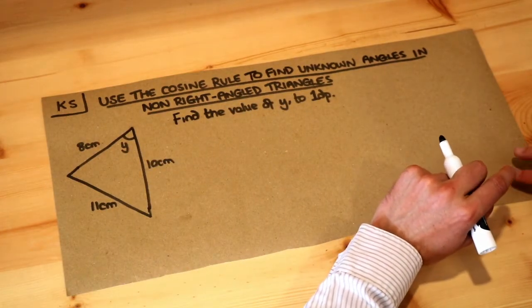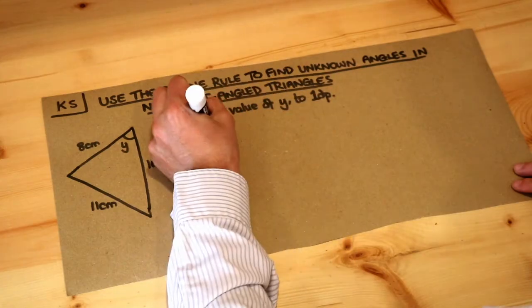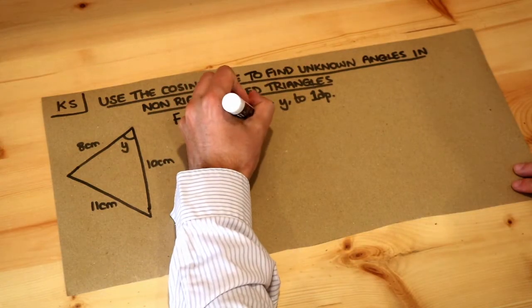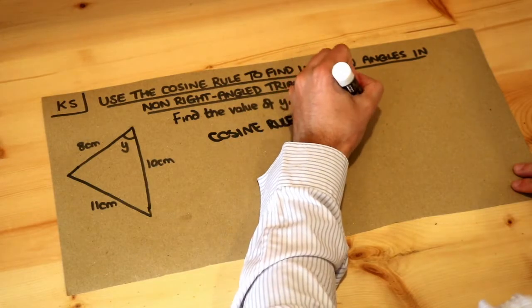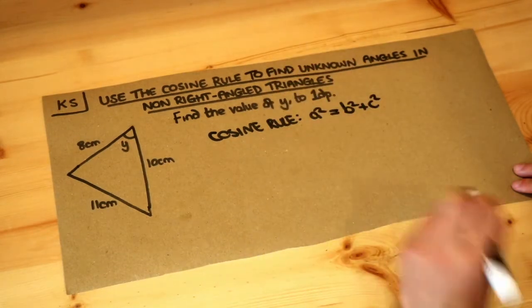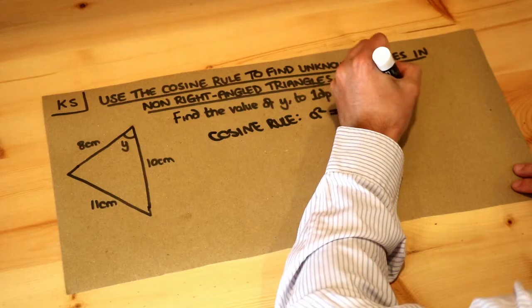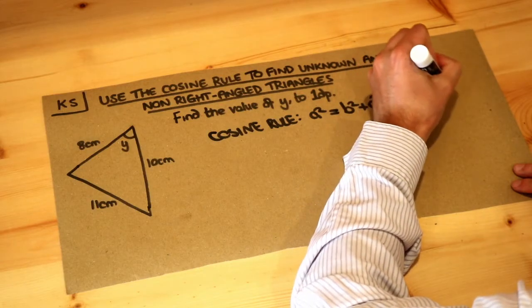Now in the previous video we saw something called the cosine rule. It looked a bit like Pythagoras theorem, so a squared equals b squared plus c squared, but because we're dealing with a non-right-angle triangle there was an adjustment, so minus 2bc cos capital A.